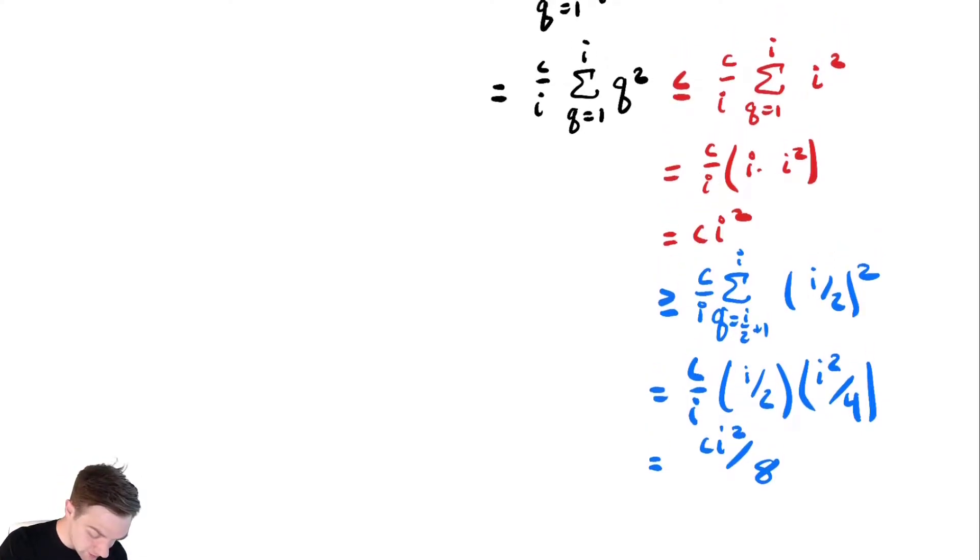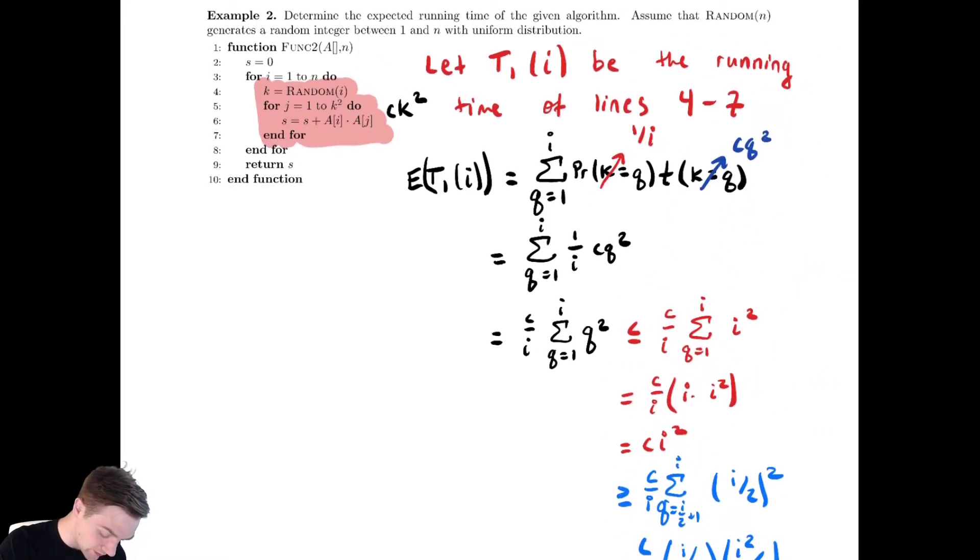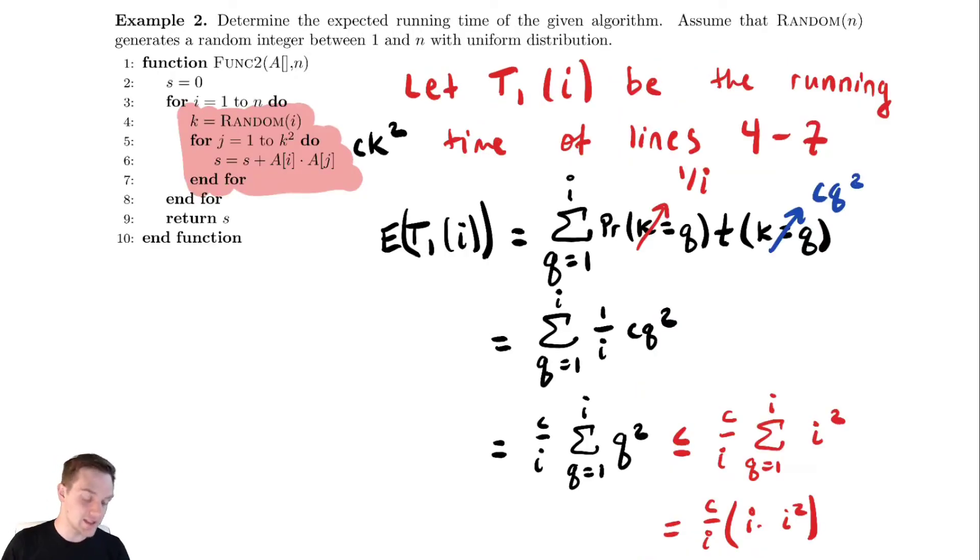So all of this stuff inside of that outer loop, lines 4 through 7 there, takes c is in theta of i². How can we use that? Well, to analyze this, let's say the expected runtime, ET(n), is equal to the expected value of that outer for loop. That outer for loop I can express as a summation from i equals 1 to n. And the runtime of the inside of that for loop I called T1(i).